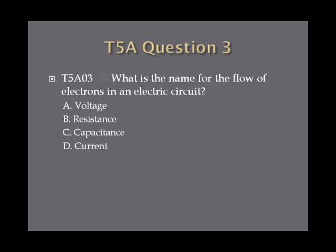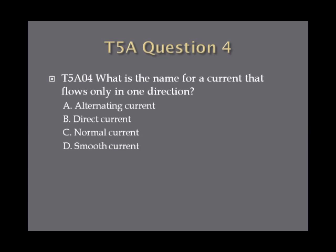Question 3: What is the name for the flow of electrons in an electrical circuit? A, voltage; B, resistance; C, capacitance; or D, current. Question 4: What is the name for a current that flows only in one direction? A, alternating current; B, direct current; C, normal current; or D, smooth current.